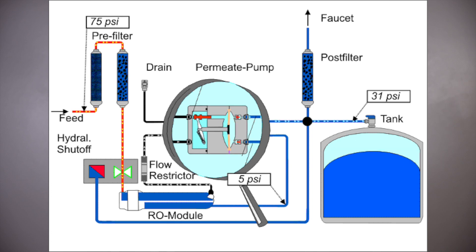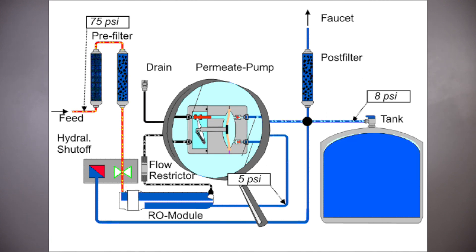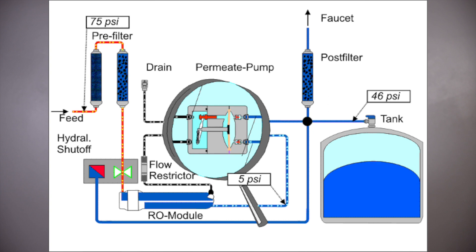The permeate pump acts as a motor to make these systems very efficient. It actually blocks the pressure buildup in the tank from getting back to the membrane, and it uses the water going to drain as the engine to push water into the tank, allowing the membrane to work at that recovery rate. The other benefit is the permeate pump provides quality of water all the way through. As the tank builds pressure, the quality of the membrane output goes down because it's fighting that pressure — but the permeate pump prevents that, so we have excellent efficiency.